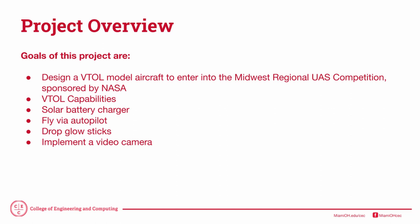The vertical takeoff and landing aircraft is able to rise up into the sky like a quadcopter and fly like a plane. It has solar battery charging capabilities and is able to fly via autopilot. In the end it will drop a glow stick at a specified location and also implement a video camera.